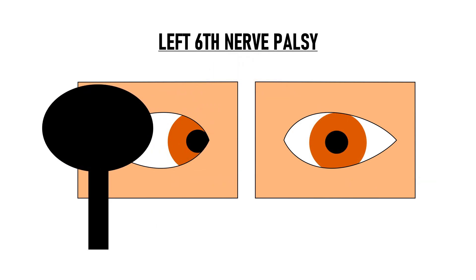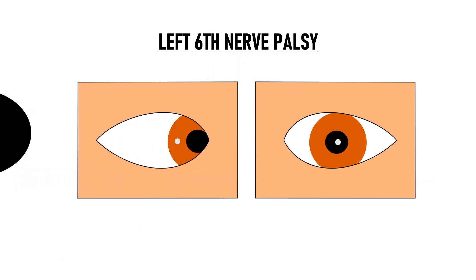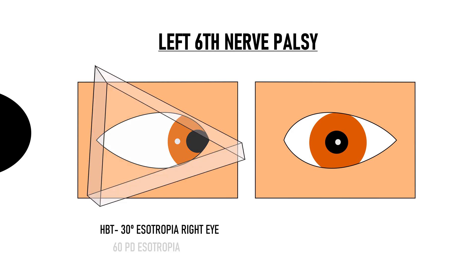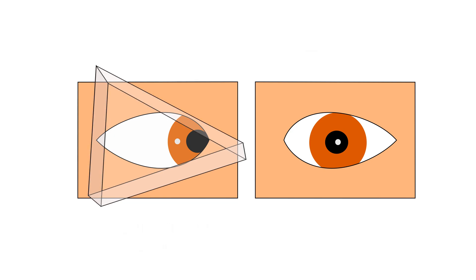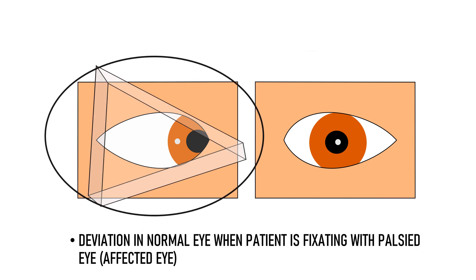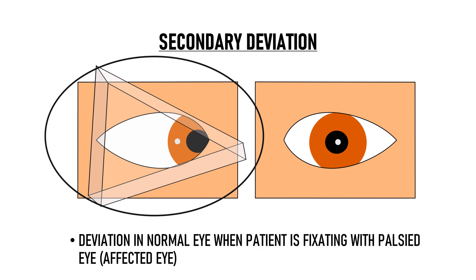Now, let's remove the cover and do the Hirschberg test. We can see that the light reflex is falling between the temporal margin of the pupil and the limbus in the right eye, and it is central in the left eye. So, our patient now has 30 degrees of esotropia in the right eye, and by prism test, the amount of deviation comes out to be 60 prism diopters. So, this deviation in the normal eye when the patient is fixating with the palsied eye is known as secondary deviation.